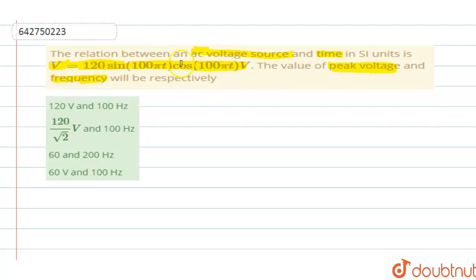They have given you an equation of a voltage source. The voltage source is given with an equation V equals 120 sine of 100π into T into cos of 100πT.